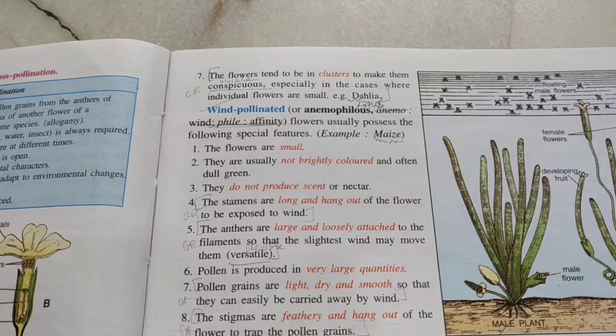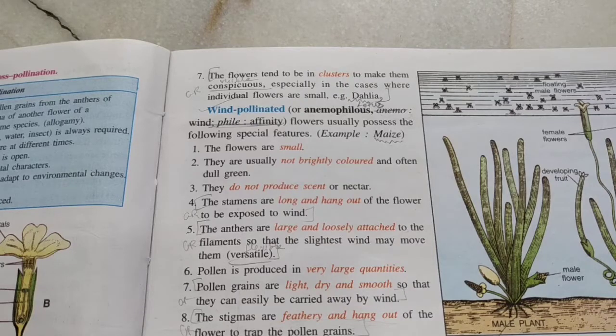Anemophilous flowers are small, not brightly colored, and don't produce scent or nectar since they don't need to attract insects. However, the stamens have to be long and hang out of the flower so they are exposed to air and the wind can easily carry the pollen grains away.